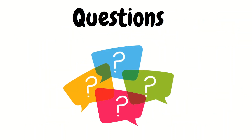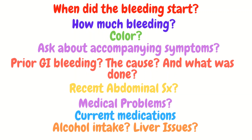Now let's get into some of the questions you need to be asking your patients. These include: When did the bleeding start and how much bleeding have they noticed? What is the color — is it bright red or is it dark? Are there any other accompanying symptoms like weakness and dizziness? Have they ever had any prior GI bleeding, and what was done and what was the cause? Any recent abdominal surgeries? Any recent or current medical problems, paying close attention to GI tract issues? What about current medications — paying close attention to blood thinners, NSAIDs, steroids, and iron intake? Does the patient drink alcohol regularly or is there a history of liver issues?